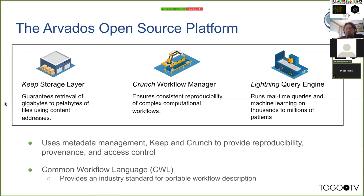There are three main pieces to Arvados. First, Keep is our storage layer — a content-addressed data management system. All the data you put into it is sliced up into little blocks referenced by their hashes. When you retrieve a block, you request it by its hash, and when you get it back you can verify you got the data you expected. This also makes it very easy to copy or deduplicate data, because you have a strong guarantee that two data blocks with the same hash are actually identical.